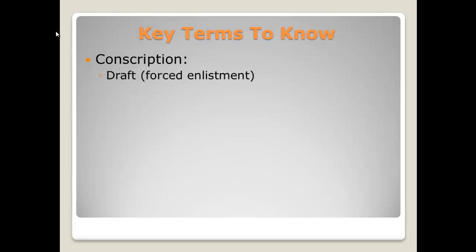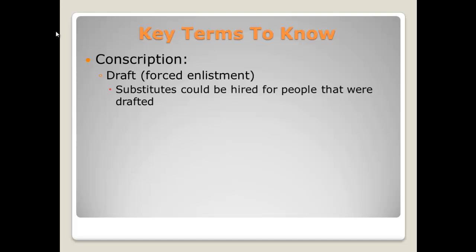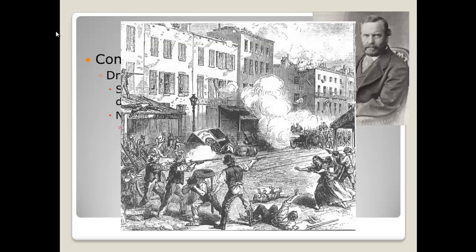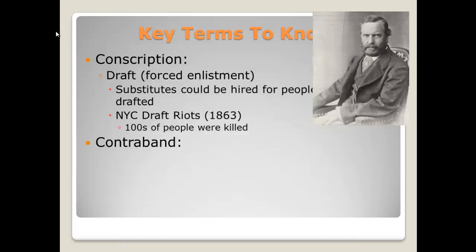Let's talk about some key terms. Conscription is a fancy word for draft or forced enlistment. During the Civil War, substitutes could be hired for people that were drafted — so if you were wealthy enough, you could pay for somebody else to go in your place. Theodore Roosevelt Senior, Teddy Roosevelt's father, actually hired a substitute for himself in the Civil War, and Teddy Roosevelt said that was the one thing his father did wrong in his entire life. As a result of the draft, in New York City there were draft riots in 1863 in which hundreds of people were killed, involving mostly Irish Americans and African Americans. A slogan developed during this time: it was a rich man's war but a poor man's fight.